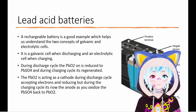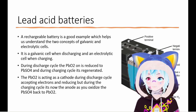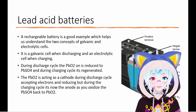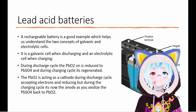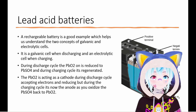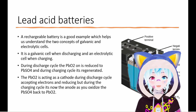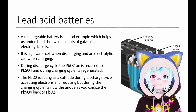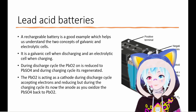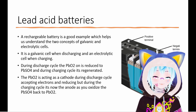Lead acid batteries are a type of rechargeable battery that gives you a good idea of a setup which is both a galvanic and electrolytic cell. These have been used practically for some time, since they are quite robust and can deliver very high amounts of current. The setup consists of two chambers filled with 34% sulfuric acid and a plastic or paper separator, and two electrodes — one made of lead oxide and the other made of lead sponge.